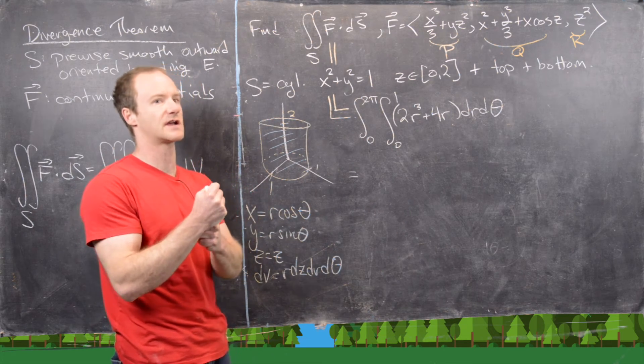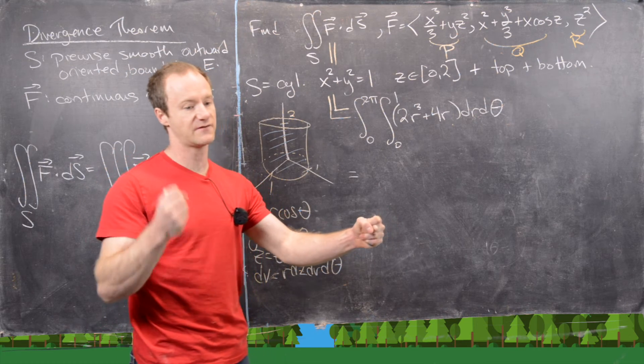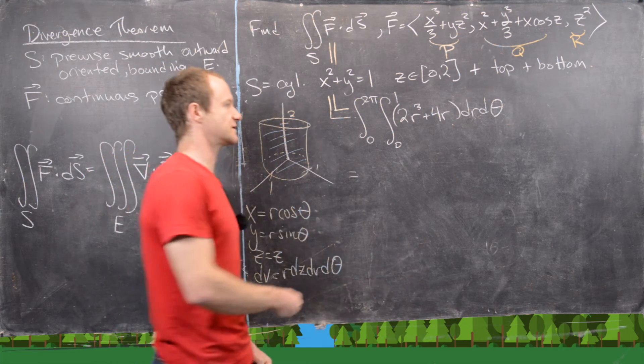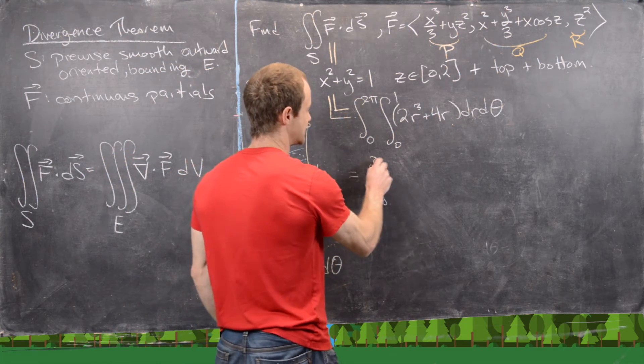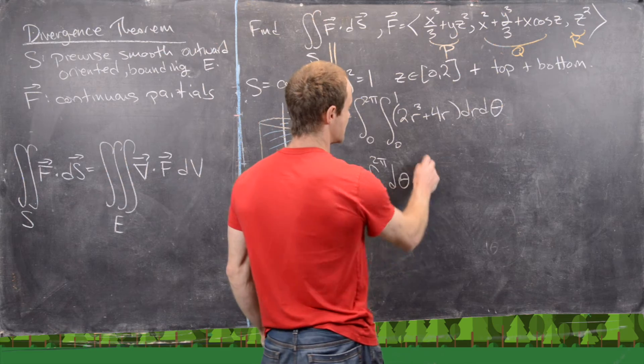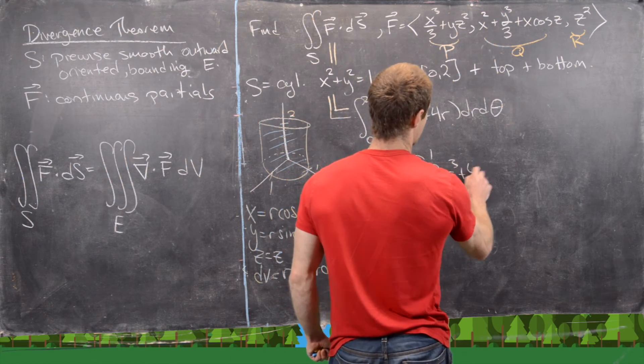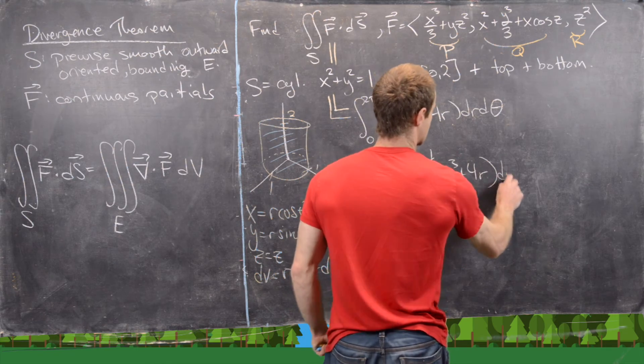When you've got a function of r times a function of theta, you can factor it into two separate integrals. Or in spherical cases, if you've got a function of rho, theta, and phi, all multiplied to each other, you can factor it into three integrals. So here we have the integral from 0 to 2pi d theta times the integral from 0 to 1 of 2r cubed plus 4r dr.